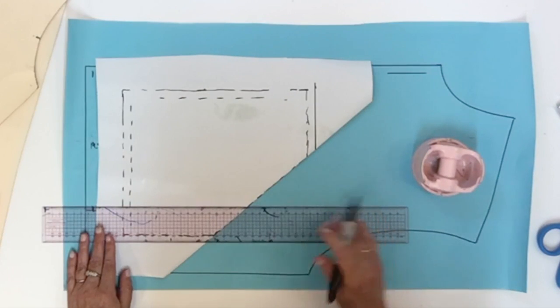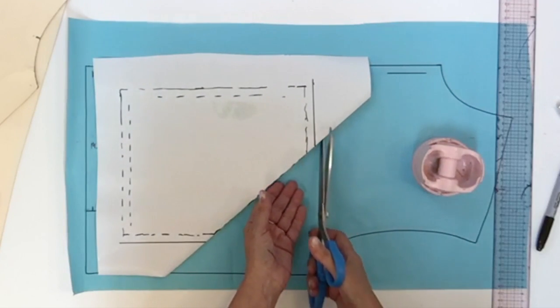Then you're going to fold on the final line, then add your seam allowance on the top of the pocket and on the side of the pocket. Then you can cut all around.